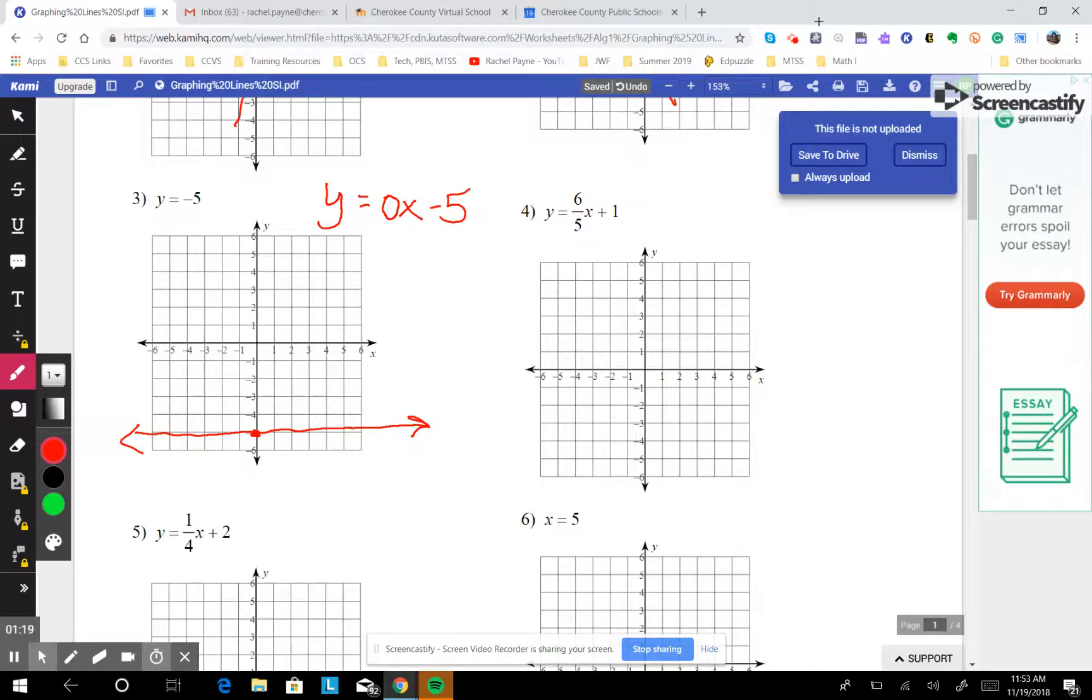Let's come over to this one. Begin at plus 1, and then you rise 6, run 5. Rise 6, 1, 2, 3, 4, 5, 6, run 5. 1, 2, 3, 4, 5.